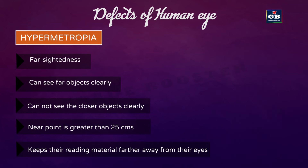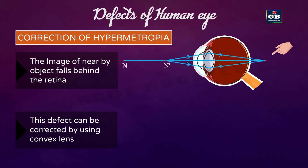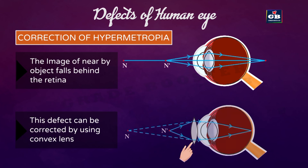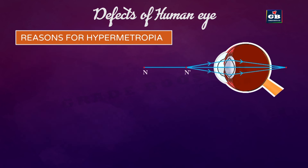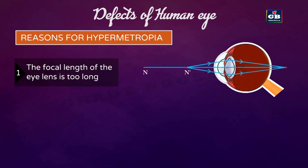This is because light rays from close-by objects are focused at a point behind the retina. This can be corrected by using a convex lens, which makes the image fall on the retina. The two reasons for hypermetropia are: the focal length of the eye lens is too long, or the eyeball has become too small.